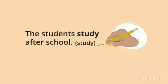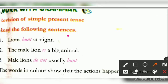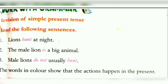Let's see the textbook activity. Read the following sentences. First: Lions hunt at night. 'Hunt' is a verb — verb shows the action. 'Lion' is a noun — a noun is the name of a place, person or thing. When it is in plural form, the verb will be only the base verb. The male lion is a big animal. Male lions do not usually hunt. These are simple present tenses showing the action.